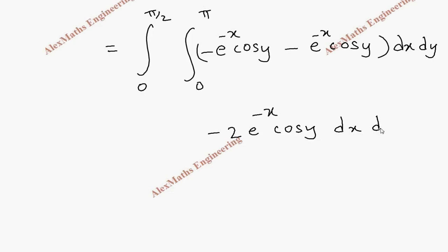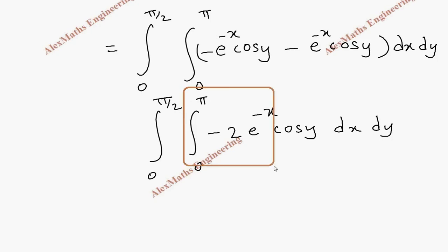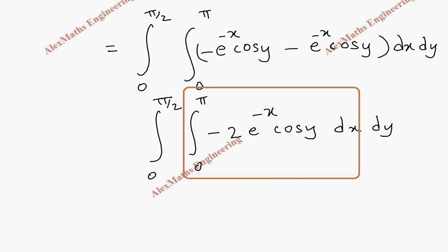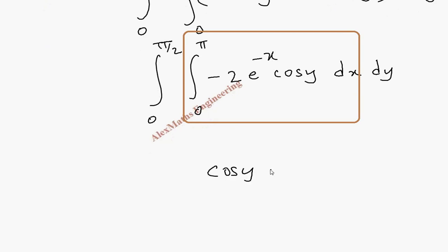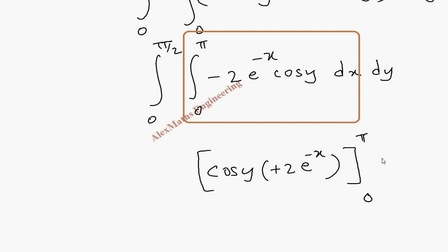We have a double integral and we first integrate with respect to x. Since y is a constant, cos(y) stays as it is, and integrating −2e^(−x) gives −2e^(−x) / (−1), which equals 2e^(−x). We substitute the limit for x from 0 to π, with the outer integral from 0 to π/2 with respect to y.